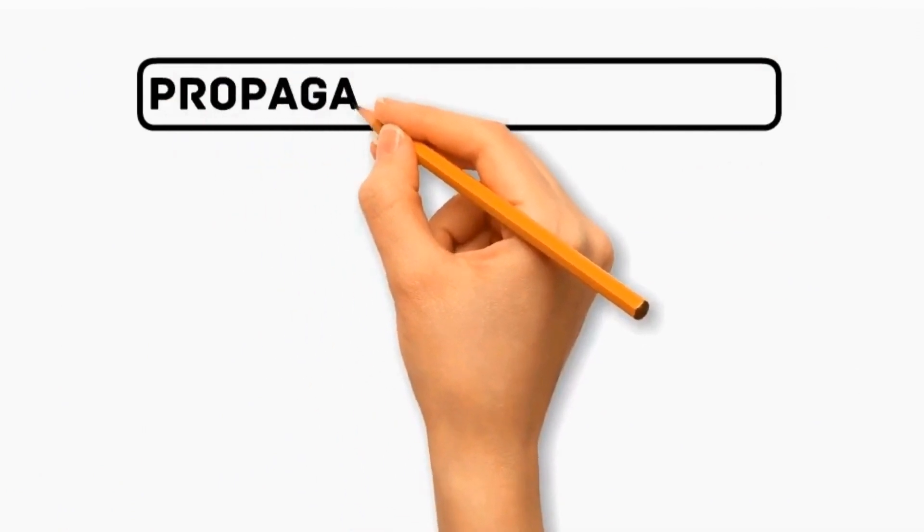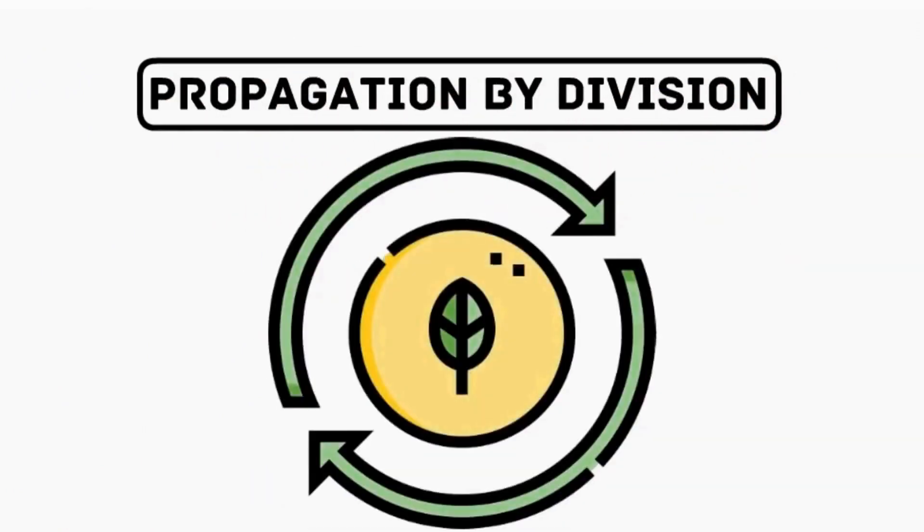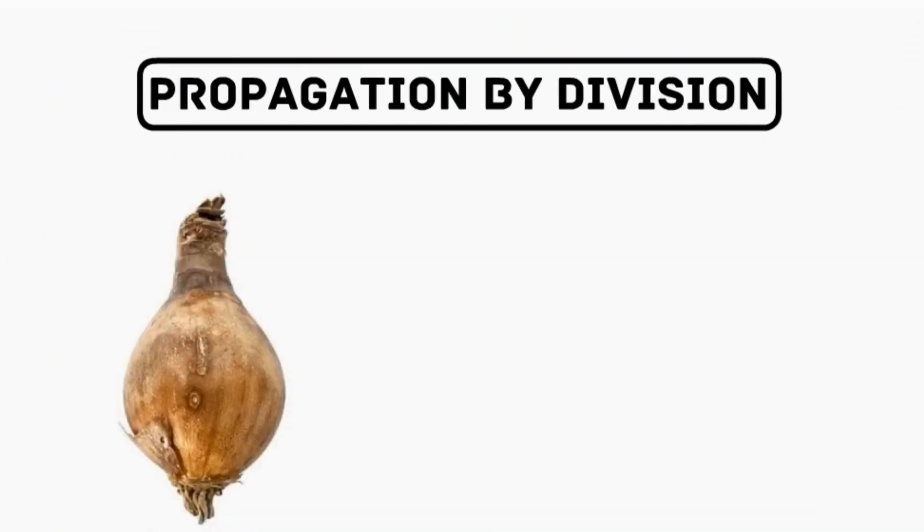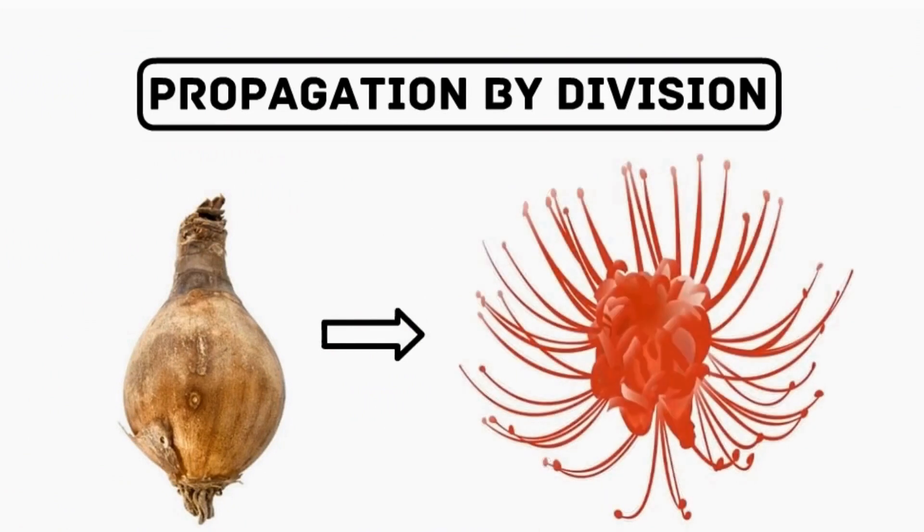Number two: Propagation by Division. It is the most common method for propagating Red Spider Lilies. It involves separating the bulbs into smaller sections and planting them individually, provide proper conditions to grow new spider plant.